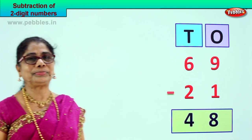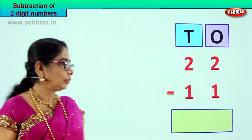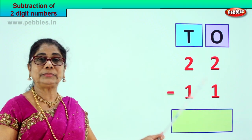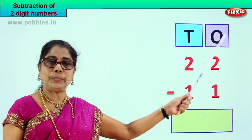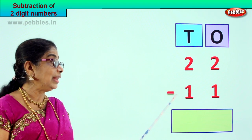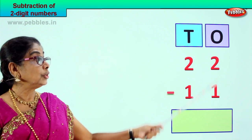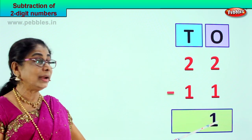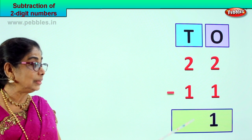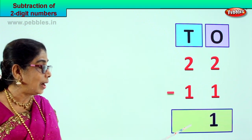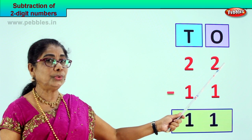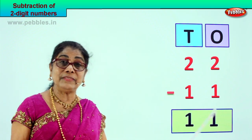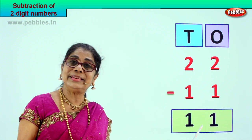Let us take another sum. Look what we have here — 22 minus 11. Two tens, two ones, one ten, one one. We have put them in ones and tens order. 22 take away 11. Go to the ones: two minus one is one, two take away one is one. Tens place: two minus one is one. So 22 minus 11 gives you the answer 11. 22 take away 11, you get answer 11.